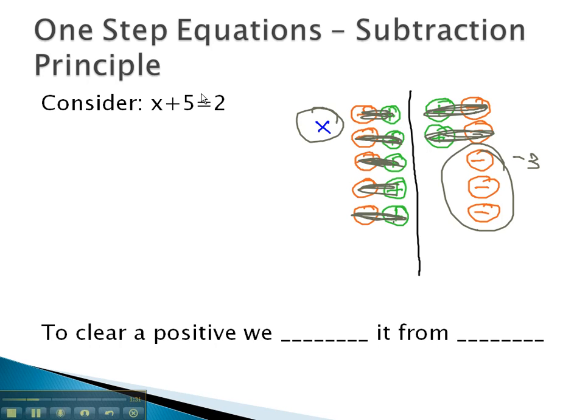We can show this visual process on the problem by noticing the x with 5 positives. We get rid of those 5 positives with 5 negatives on both sides of the equation. They will subtract out, and x is equal to 2 minus 5 or negative 3. So, very similar to the addition principle, the subtraction principle tells us to clear a positive, we will just subtract it from both sides.